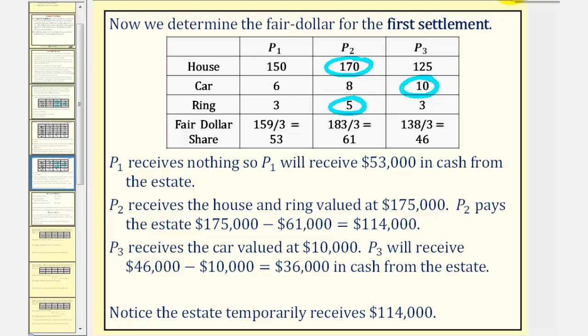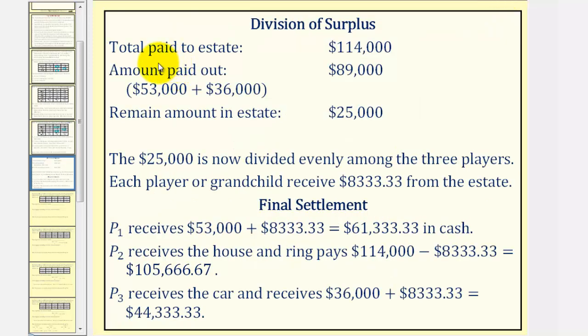To determine the final settlement, the estate is paid $114,000 from player two but pays out cash to player one and player three in the amount of $89,000, leaving excess cash of $25,000 to be divided among the three players. $25,000 is now divided evenly among the three players, which comes out to $8,333.33 for each grandchild.